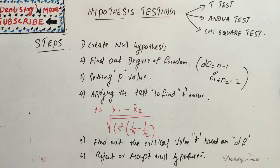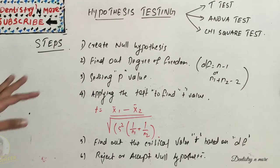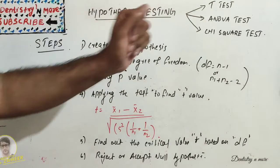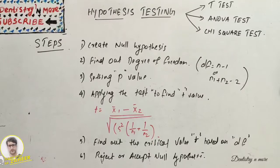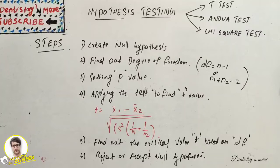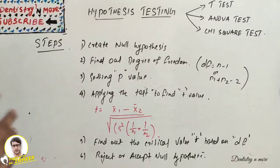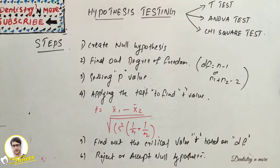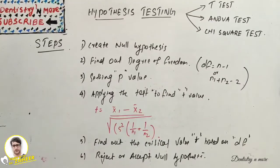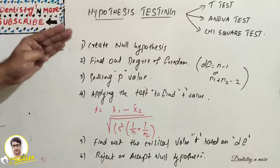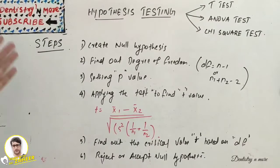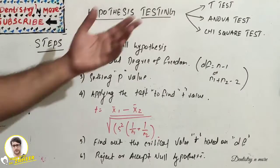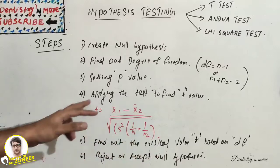Hello everyone, welcome back to another session in Dentistry and More. We have a small session regarding hypothesis testing. We'll be looking into t-test, ANOVA, and chi-square test at a preliminary level. I've already uploaded many videos regarding biostatistics and hypothesis testing. This session covers the preliminary steps — how to perform hypothesis testing. If a question comes on t-test, ANOVA, or chi-square test, you can write these six steps, as they are the basic steps for any test.